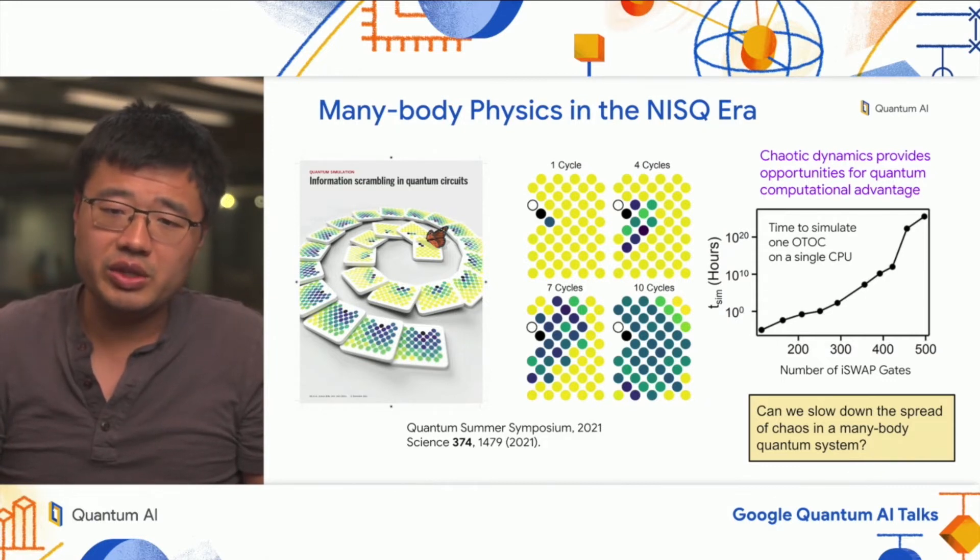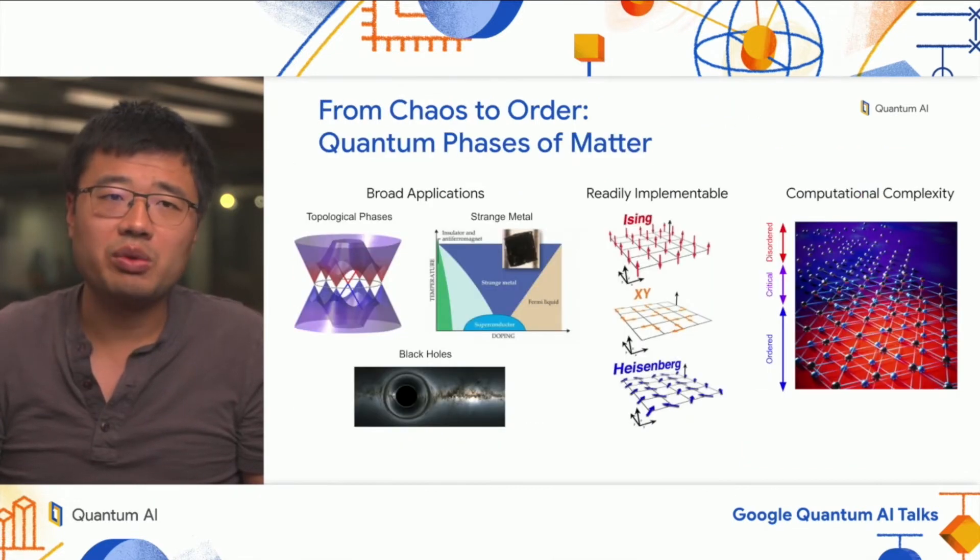But the topic of today is to ask the other question: can we slow down the spread of chaos in a many-body quantum system? The answer lies in the fact that once you slow down the chaos, oftentimes what forms in the quantum system is a different phase of matter. As we all know, quantum phases of matter have a lot of practical interest in the community.